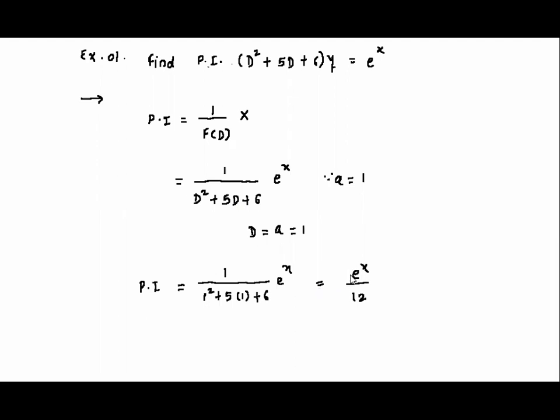So this could be our final answer e to the power x upon 12. One plus 5 plus 6 must be 12. So in this way, we have completed the first case of our particular integral.